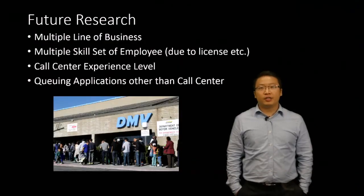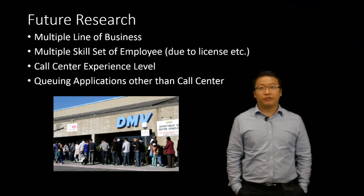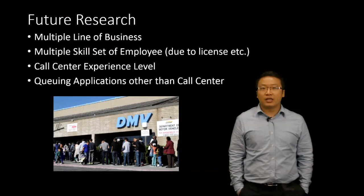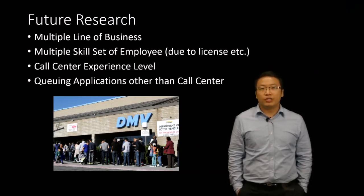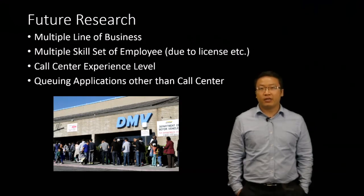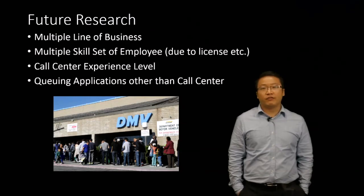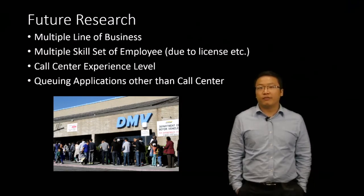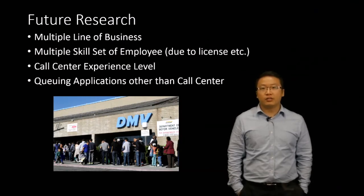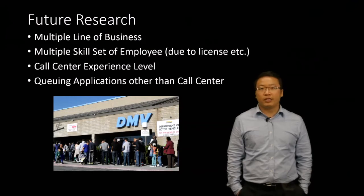There are several areas for future research. First, there could be multiple lines of business — incoming calls could be claims, marketing, or technology — and employees could have multiple skill sets, where certain staff can only handle specific call types due to licensing or training requirements. Second, we can incorporate call center experience level: more experienced staff can handle certain calls faster and more efficiently, requiring adjustments to the model parameters. Third, our queueing model could apply beyond call centers — for example, DMV offices, where different types of customers wait in queue, could benefit from this model to optimize staff arrangement and management.